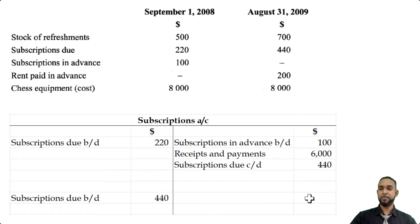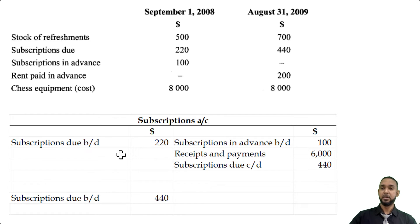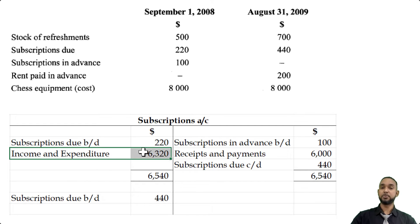There was no closing prepaid balance, so we don't have a matching figure there. What we're missing is the subscriptions earned — the income and expenditure figure. That goes on the debit side. Both sides have to total $6,540. We currently only have $220 on the debit side, so we subtract: $6,540 minus $220 gives us the income and expenditure figure of $6,320 — subscriptions earned.